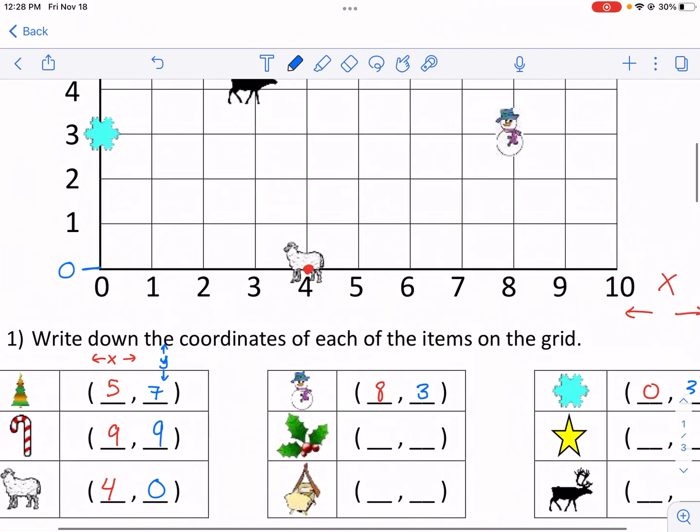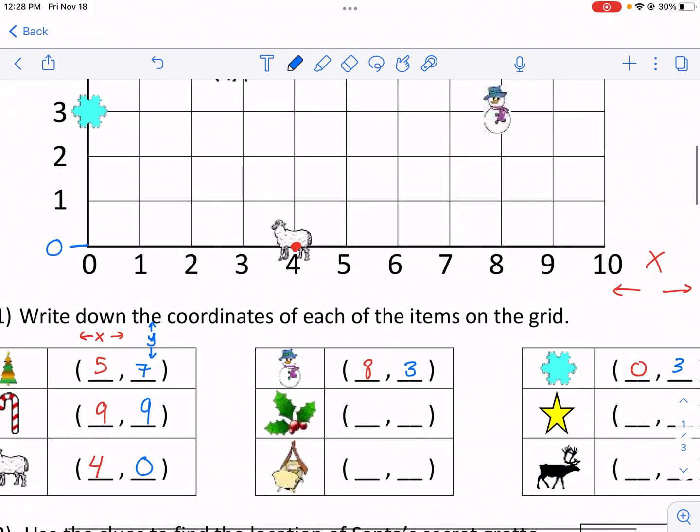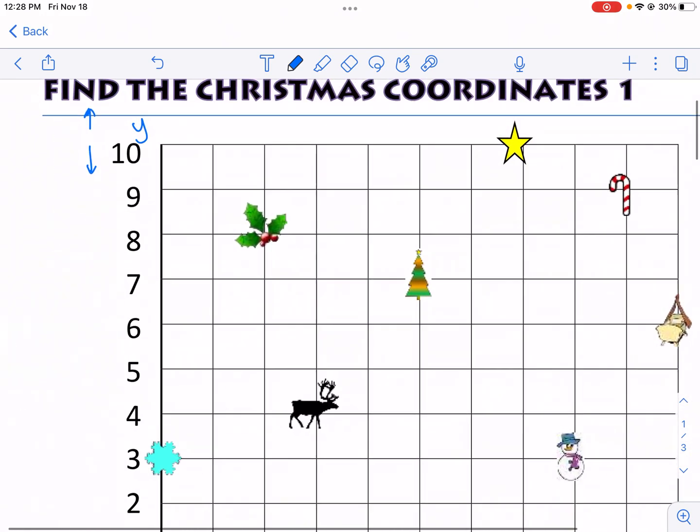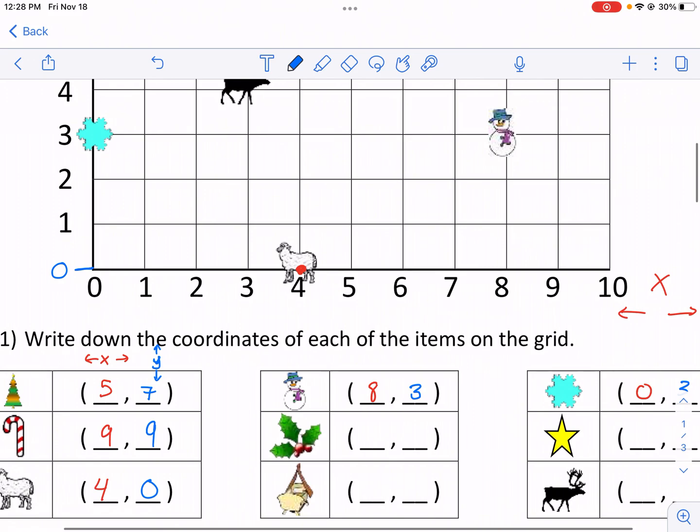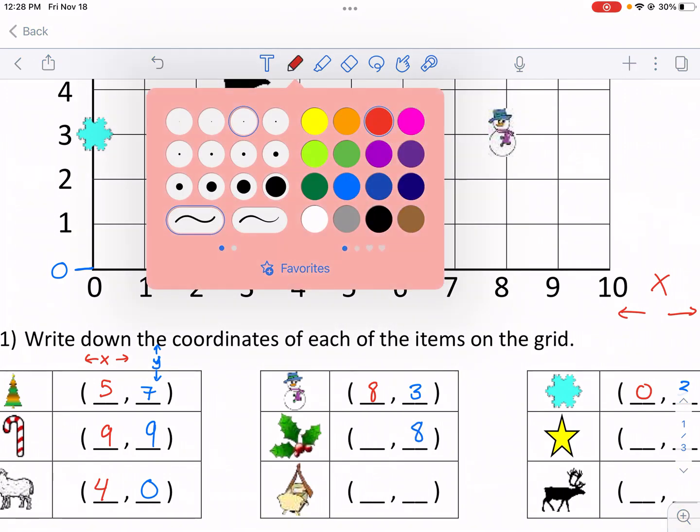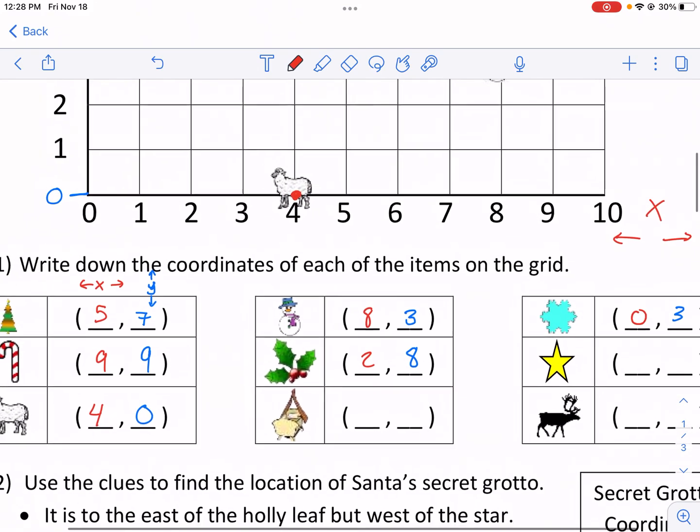Now the holly leaf. I'm going to look for that one, and it looks like two, comma, eight. Again, I'm reading the bottom number first, and then the top number. So there's the eight, and then two. So two goes first, and then the eight.